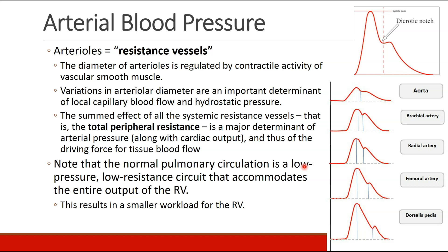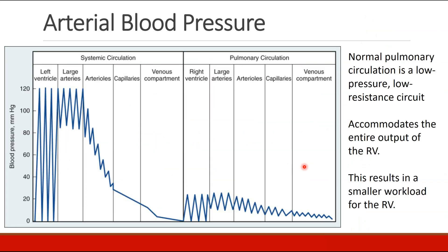The pulmonary circulation is a low-pressure, low-resistance circuit which accommodates the entire output of the right ventricle, resulting in a smaller workload for the right ventricle. To summarize: the left ventricle has pressures of systolic 120 and diastolic 0. Large arteries still have high systolic and diastolic pressures due to aortic valve closure. Pressures start to drop rapidly at the arterioles and capillaries, with capillary pressure maintained around 30 mmHg, then falling to near zero in the venous compartment. The same process occurs in the pulmonary circulation but with much lower pressures.